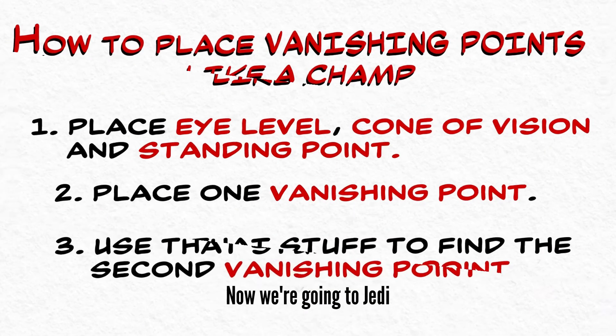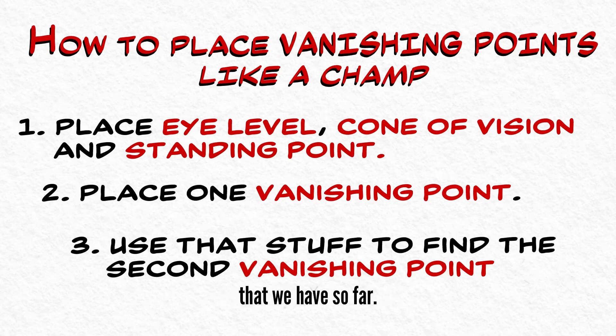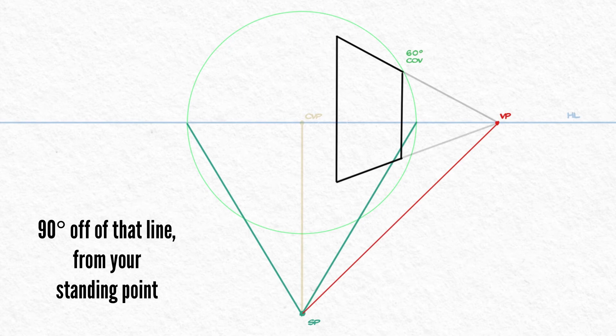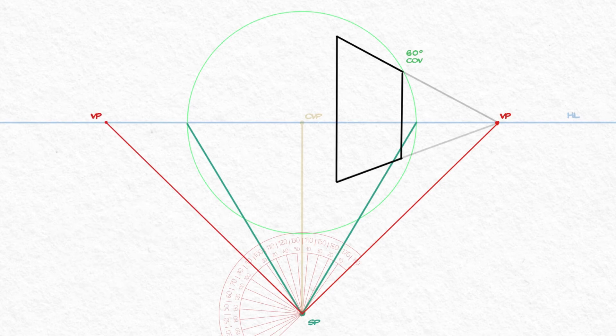Now we're gonna Jedi the second vanishing point using all the information that we have so far. Connect vanishing point number one down to the standing point. 90 degrees off of that line from your standing point, you have the key to vanishing point number two, and voila!